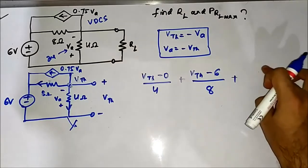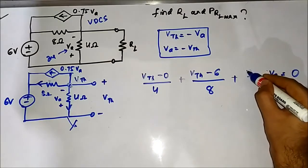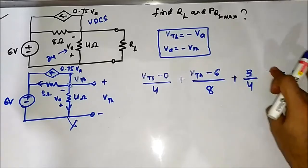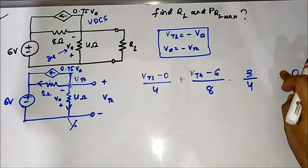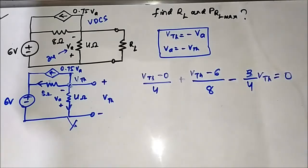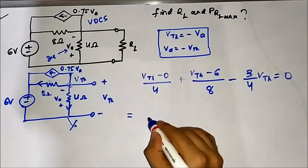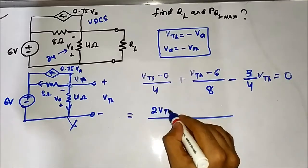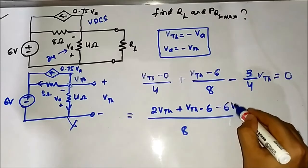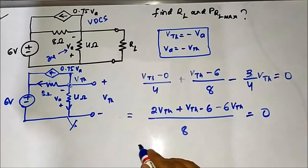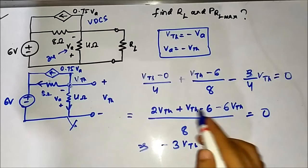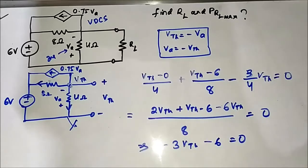We write 0.75 as 3 by 4, and substitute Va as minus Vth. This gives 3 by 4 times minus Vth, so the 3/4 Vth terms cancel. Multiplying through with LCM 8, we get 2Vth plus Vth minus 6 equals 0, which simplifies to 3Vth minus 6 equals 0.